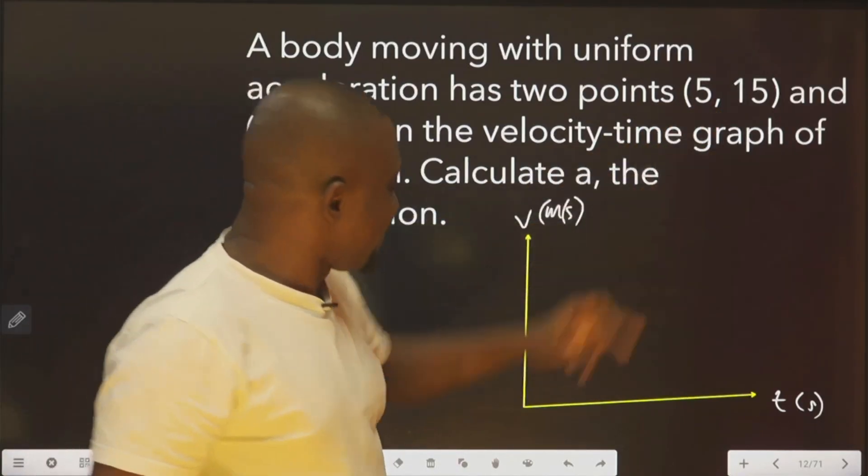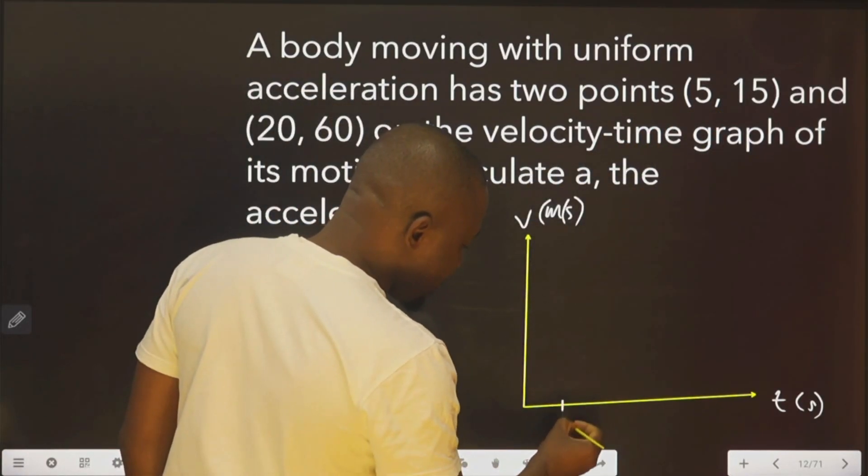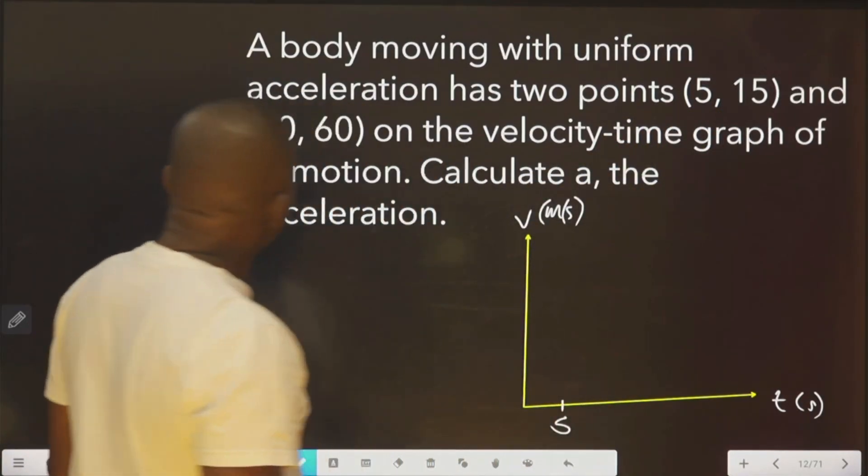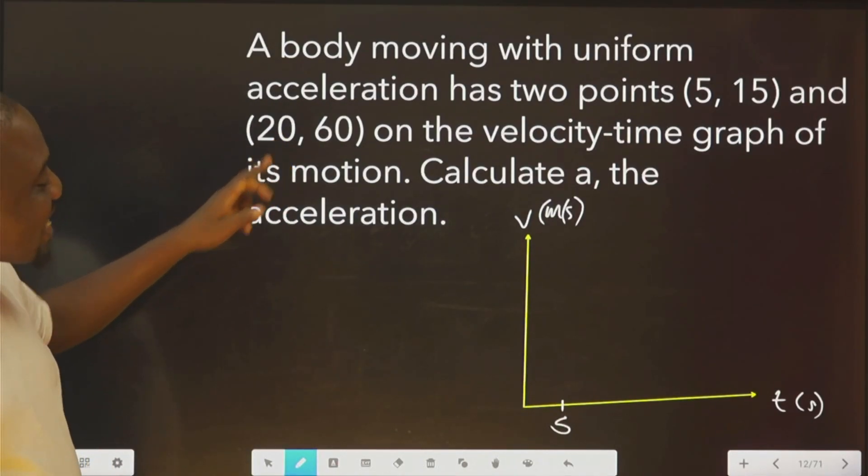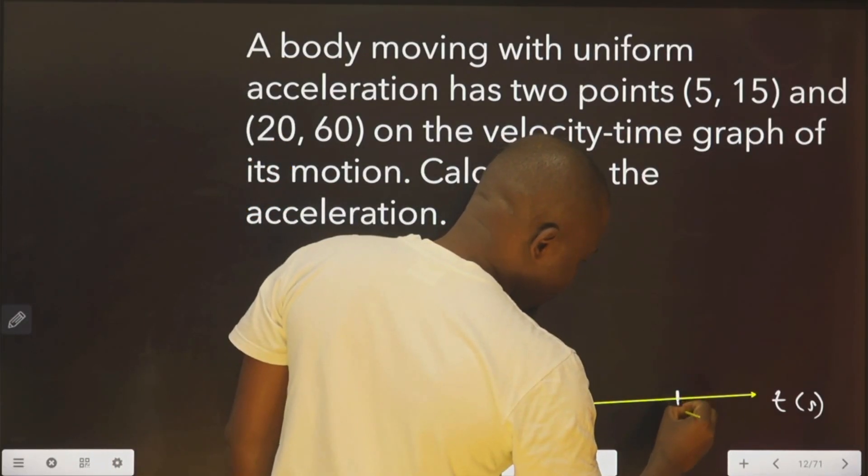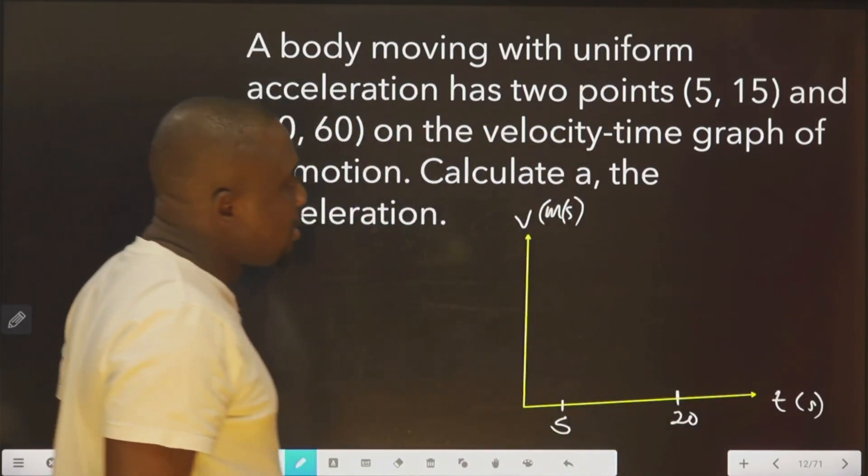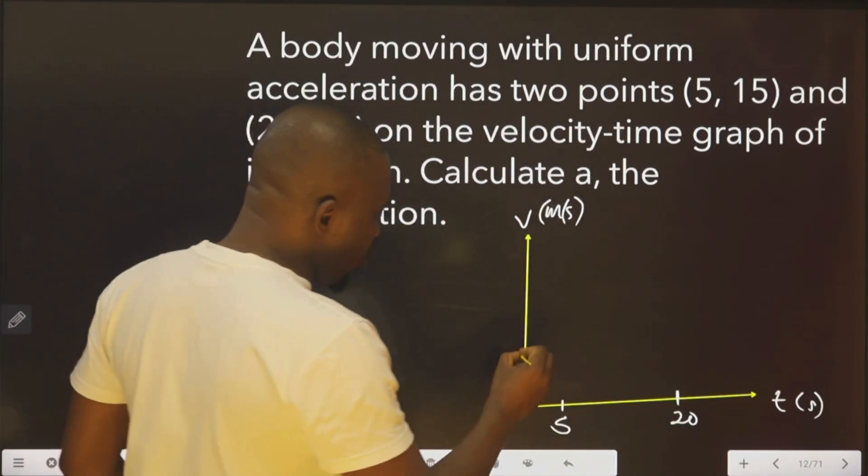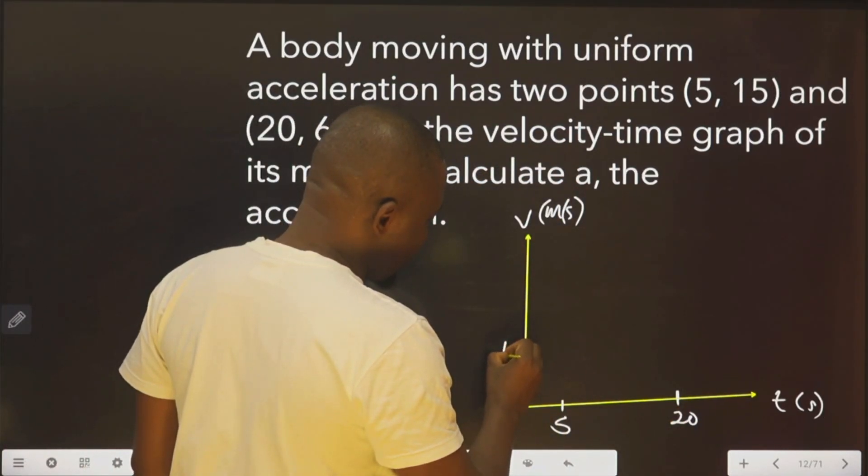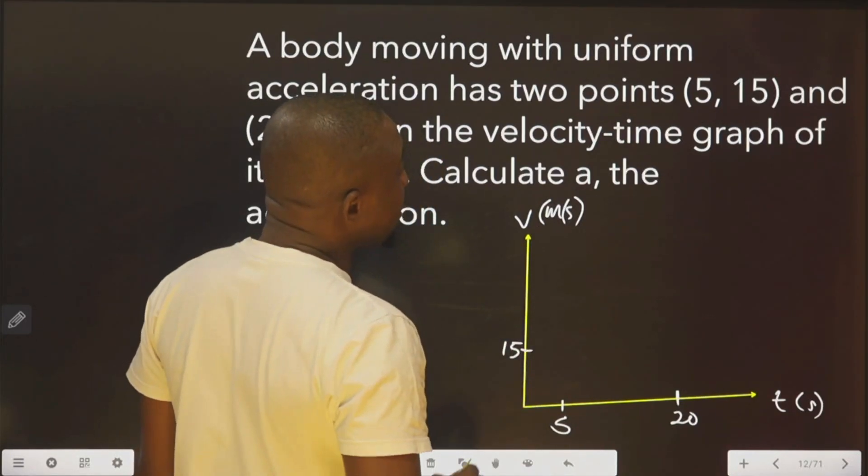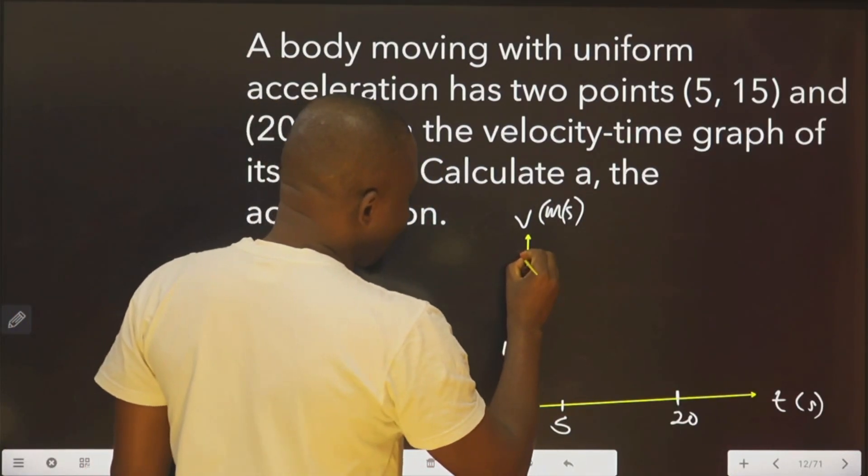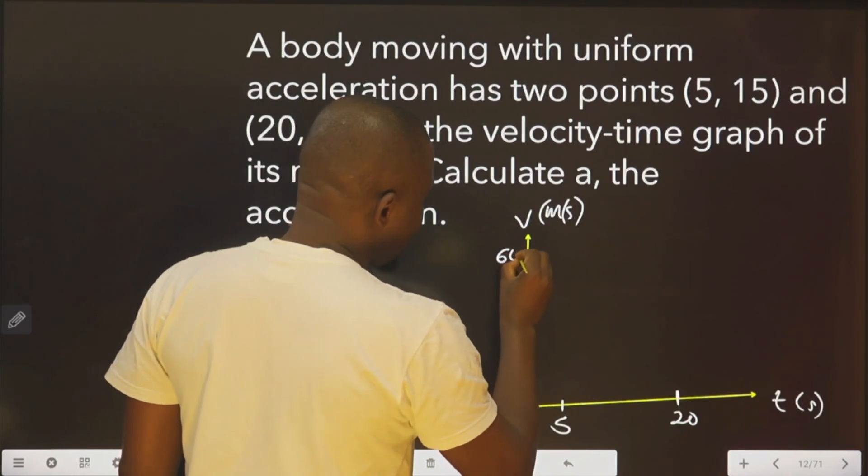So for the x-axis, 5. Let's say it's somewhere here. For this other one, this is x. Let's say it's somewhere here. 20. We go back. 15. Let's say it's somewhere here. 60. Let's say it's somewhere here.